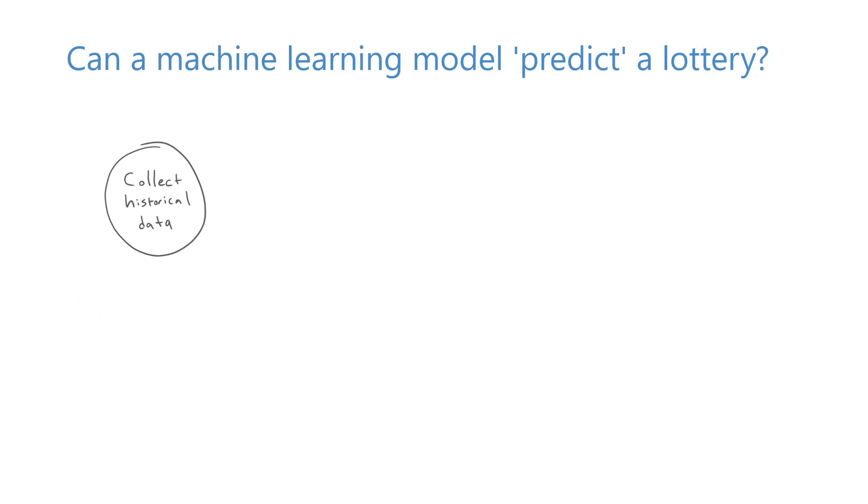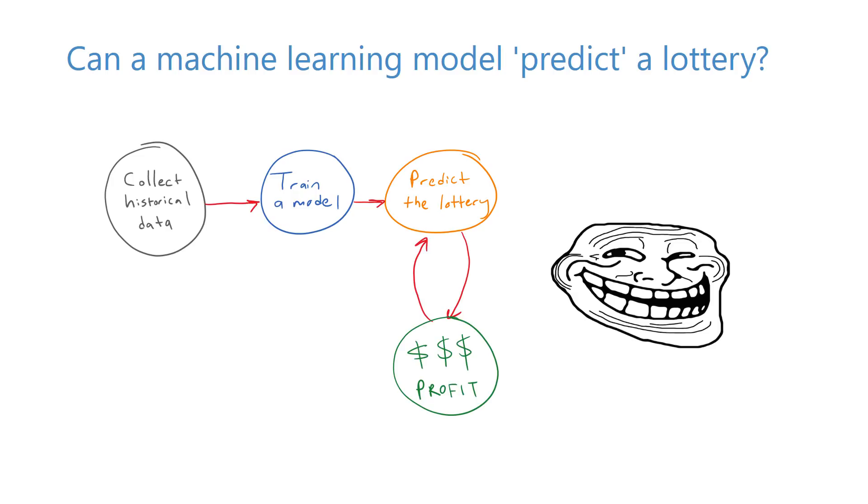Can't we just put together a dataset that consists of historical lottery data, train a model that fits that dataset, use that model to predict the next lucky numbers, and get rich?